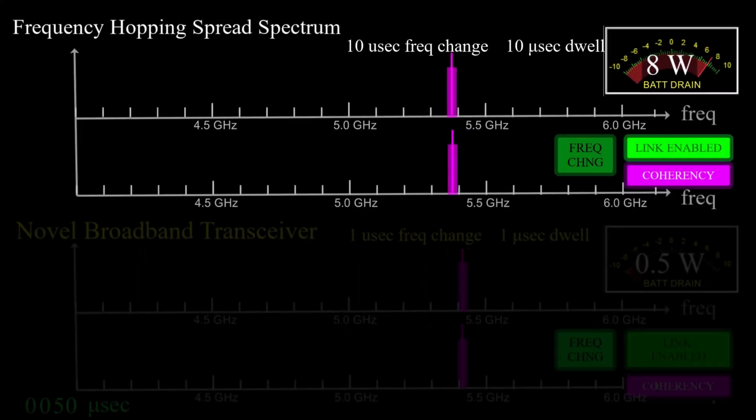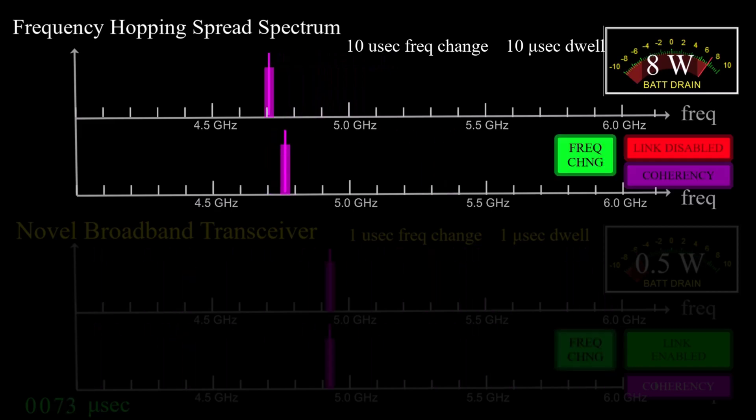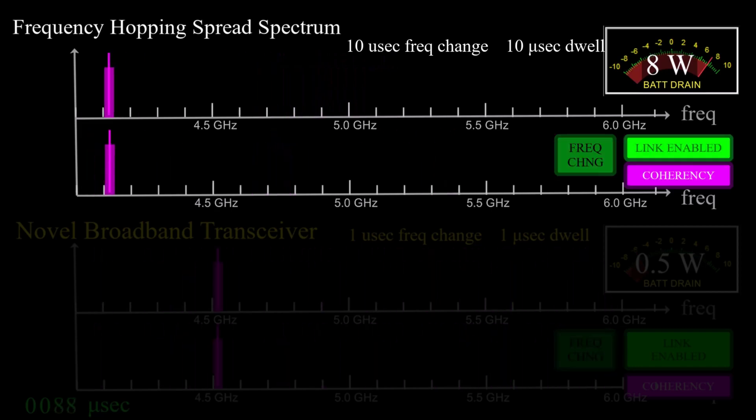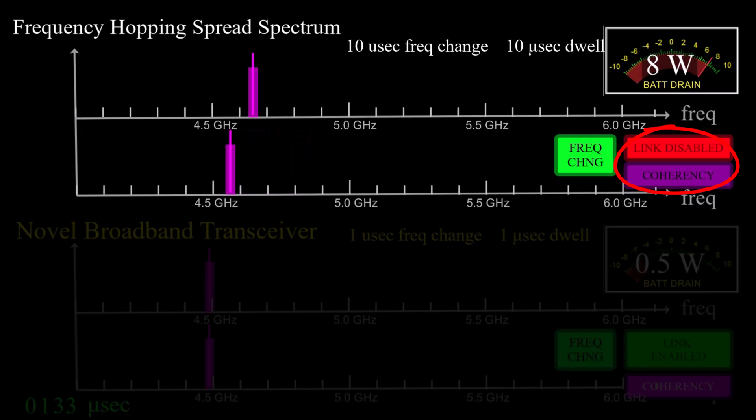The top half of the display shows the spread spectrum case. Each time the transmitter changes frequency, there is a delay for the receiver to tune a PLL to the new frequency. The link is closed during frequency transitions and reopened after the receiver settles and coherency is re-established.